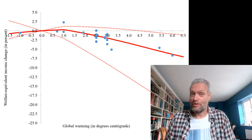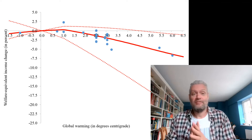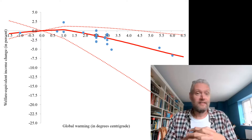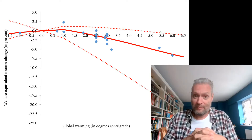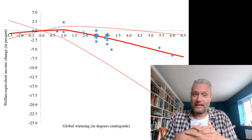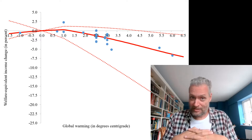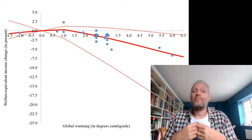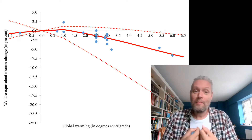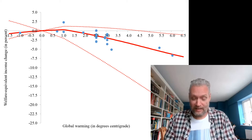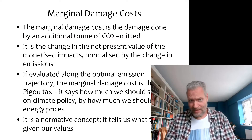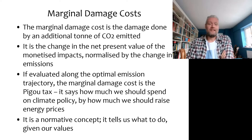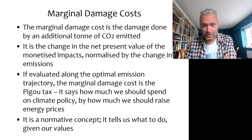Intuitively, if you are in charge of a small, medium-sized, or even a large country between two elections — four or five years — then you cannot take away all of climate change. You can only take away a little bit of climate change. So you are not interested in the total impact; you are interested in what happens incrementally, what happens at the margin. The marginal damage cost, or social cost of carbon, is defined as the damage done if you emit an additional ton of CO2.